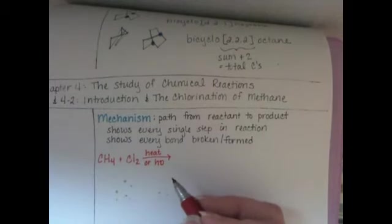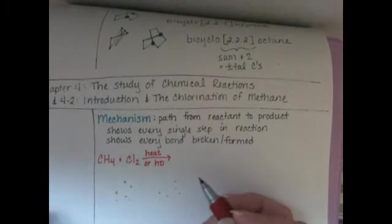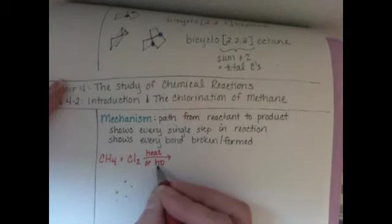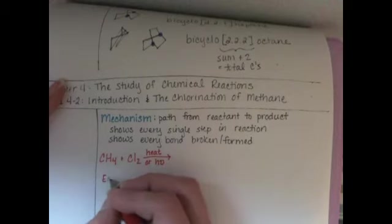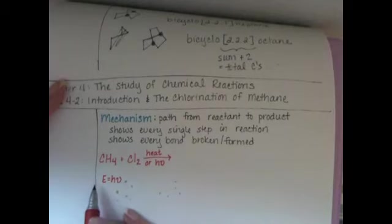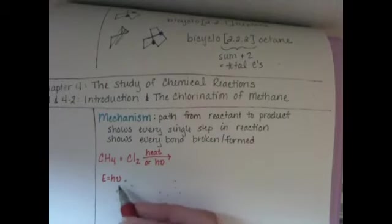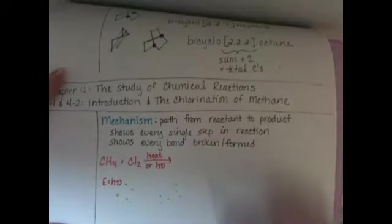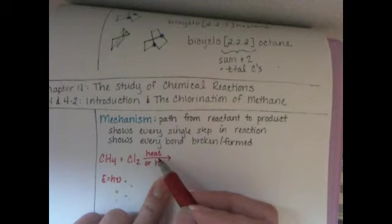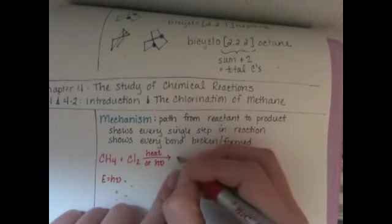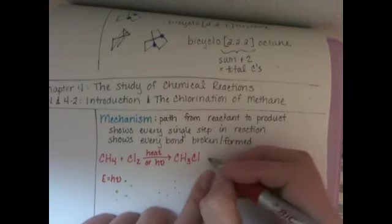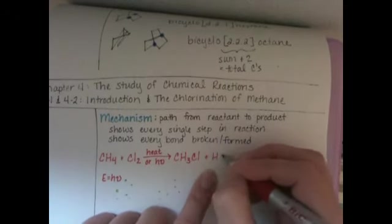We're going to use the notation H nu to symbolize light. That was notation we used here at Skagit for Gen Chem as well. If you're not familiar with using that notation H nu for light, it just comes from this equation E equals H nu, where H nu gives us energy of a photon of light. H nu just takes up less space than light, so that's why we use it. When you would mix methane gas with chlorine gas in the presence of either heat or light, you would end up with a monochlorinated product, CH3Cl chloromethane, and you'd also get a little bit of HCl gas.